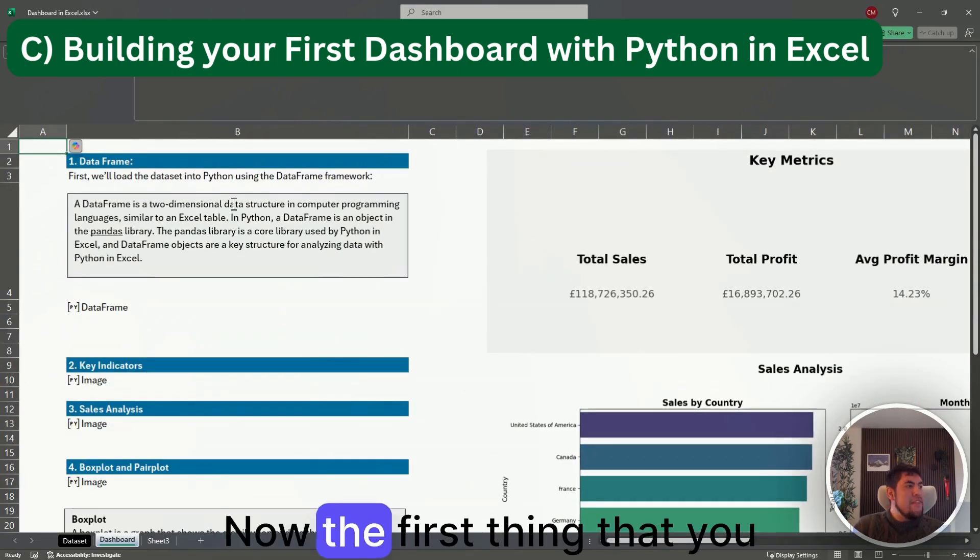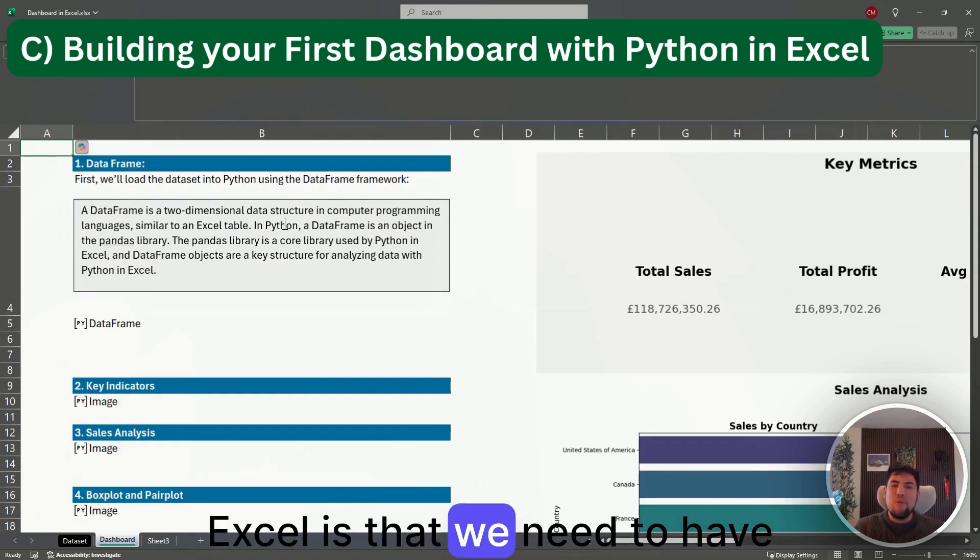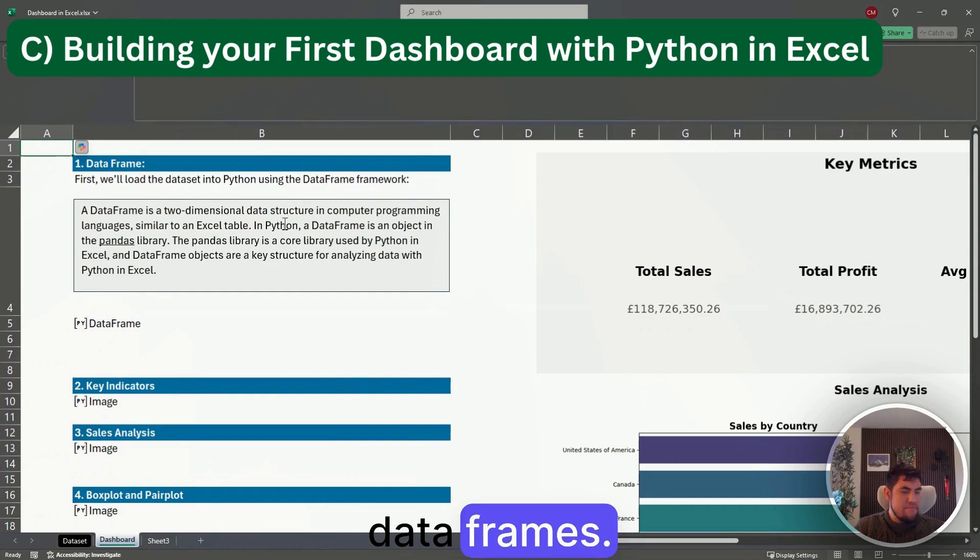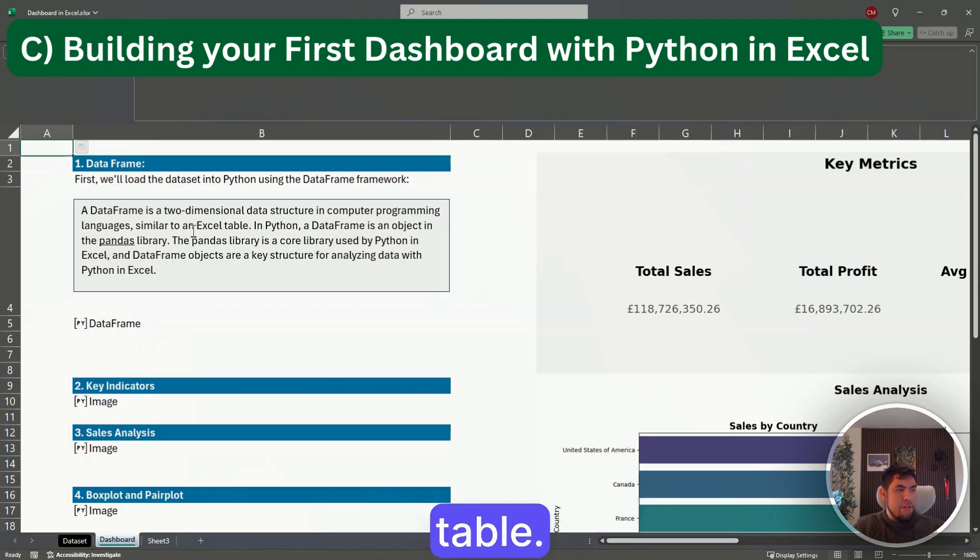Now the first thing that you need to know for Python in Excel is that we need to have data frames. A data frame is just a two-dimensional data structure that is similar to an Excel table.